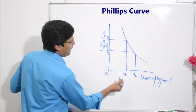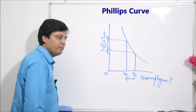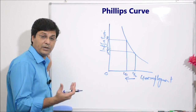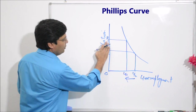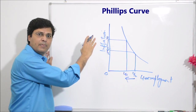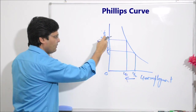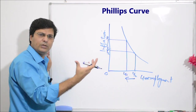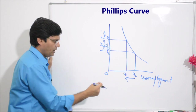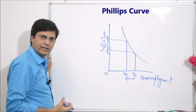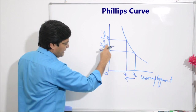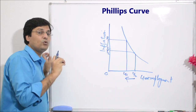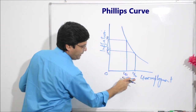Unemployment ghat raha hai — unemployment ghatne ka matlab logon ko zyada jobs milna, logon ko zyada paisa milna, paisa milna to money supply bada raha hai, aur money supply badh gayi to inflation hoga. Agar prices high hain to demand kam hogi aur unemployment kam hoga, log zyada employee honge. Lekin agar price ghat raha hai to logon ke paas paisa kam ho raha hai, paisa kam hone se log jobless ho rahe hain, to us case mein unemployment badega.